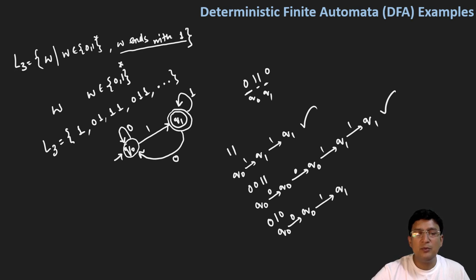On one we move to q1, on zero we move back to q0. We have tested all three symbols and q0 is not a final state, therefore this string will be rejected.